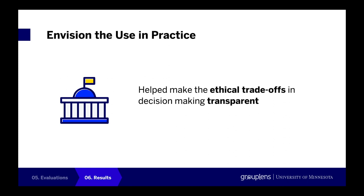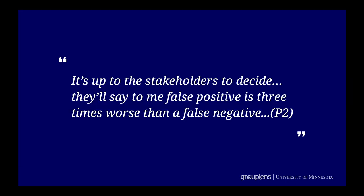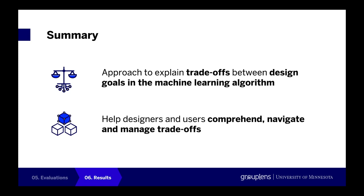From our expert study, we found that our interfaces help make the ethical trade-offs in the decision-making process transparent, and also created opportunities for users to express their perceptions of different misclassified cases. As one participant commented, "It's up to the stakeholders to decide. They will say to me false positive is three times worse than false negative." To summarize, we developed methods to explain trade-offs between multiple objectives in algorithms, demonstrated our approach with a concrete case study, and evaluations show our method is promising in helping designers and users navigate and manage algorithmic trade-offs.